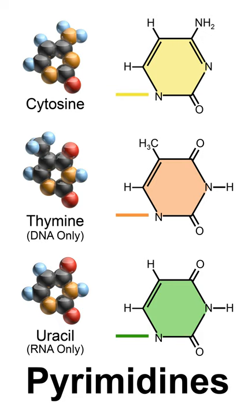Pyrimidine is also found in many synthetic compounds such as barbiturates and the HIV drug zidovudine. Although pyrimidine derivatives such as uric acid and alloxan were known in the early 19th century, a laboratory synthesis of a pyrimidine was not carried out until 1879, when Grimaux reported the preparation of barbituric acid from urea and malonic acid in the presence of phosphorus oxychloride.